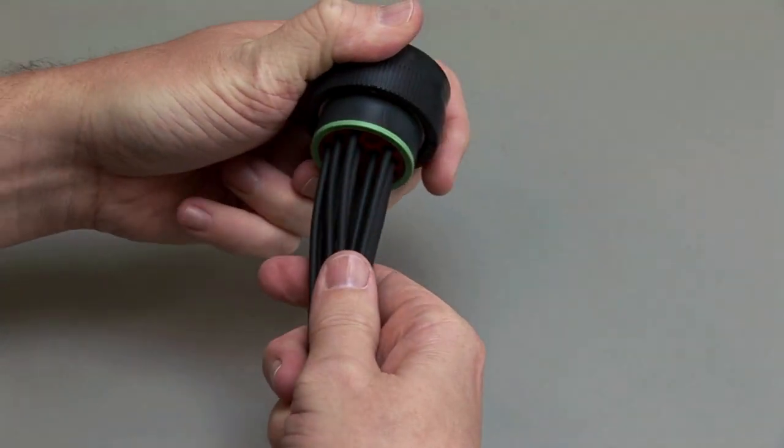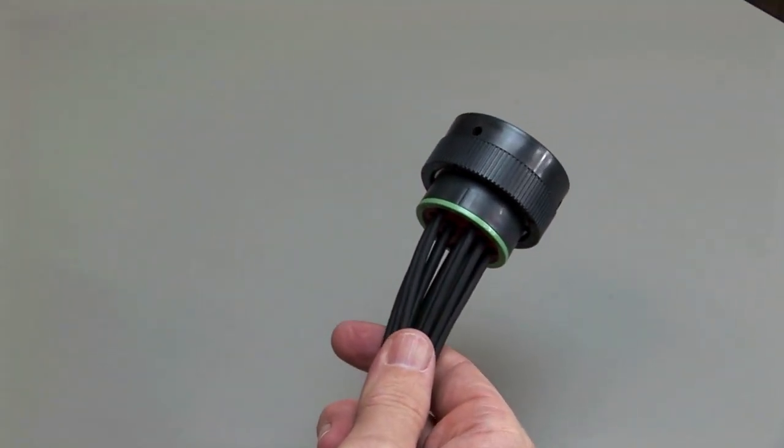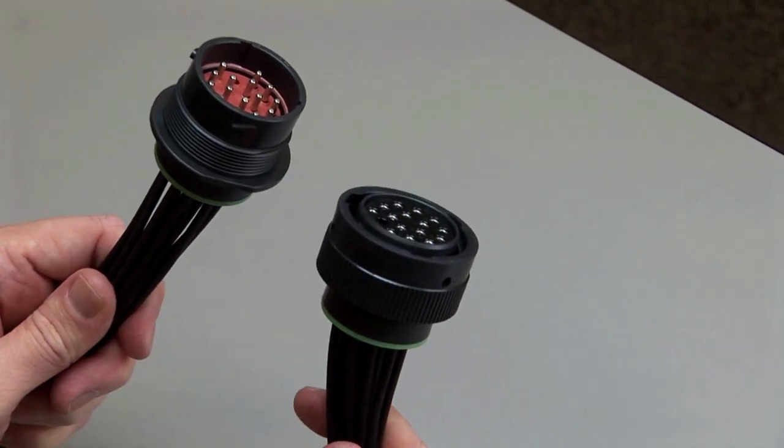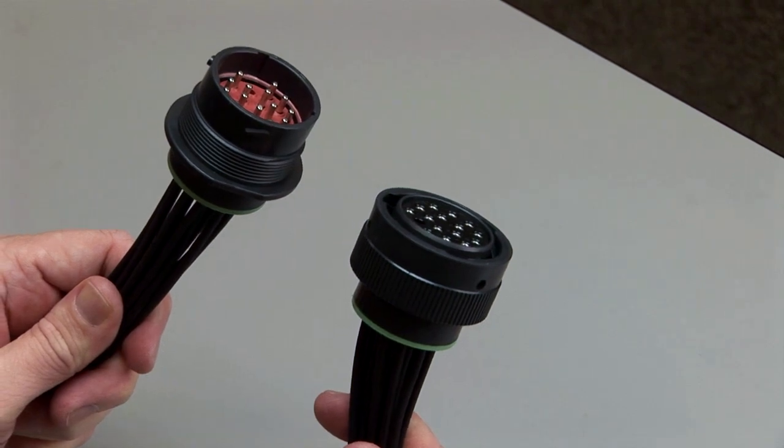Repeat this process until all of the cavities are filled. Repeat the same process for the receptacles and the plug halves of the connectors. Make sure to insert the contacts into the rear grommet.